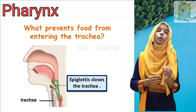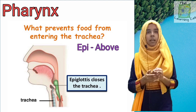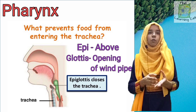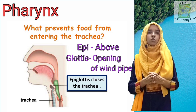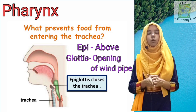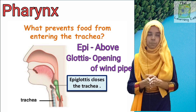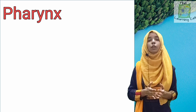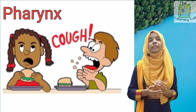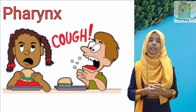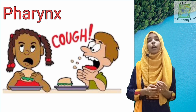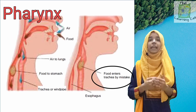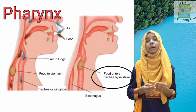Why do we call it epiglottis? Because 'epi' means above, and 'glottis' is the term for the opening of the wind pipe. So the epiglottis is a structure which covers the wind pipe during swallowing of food. This is the reason that when we talk while eating, we tend to cough — because a food particle has entered the wind pipe. Coughing is our body's reflex mechanism to expel the food particle; otherwise it can choke our air passage.